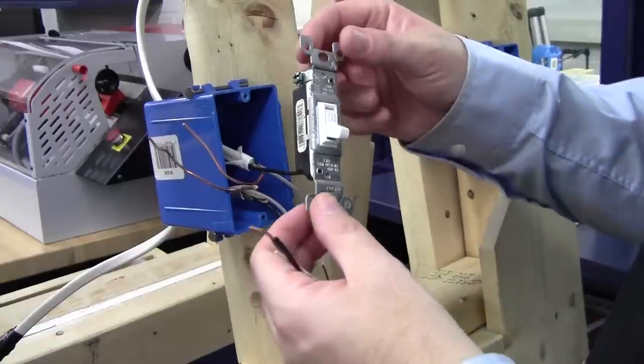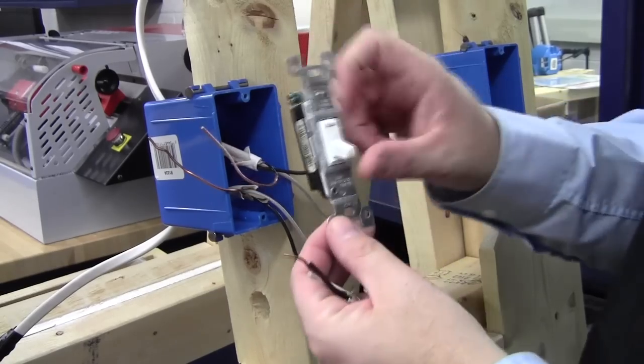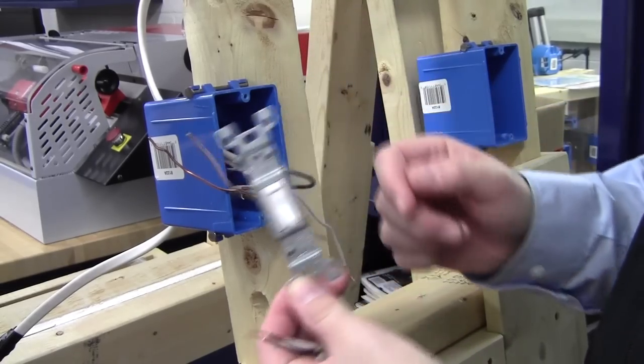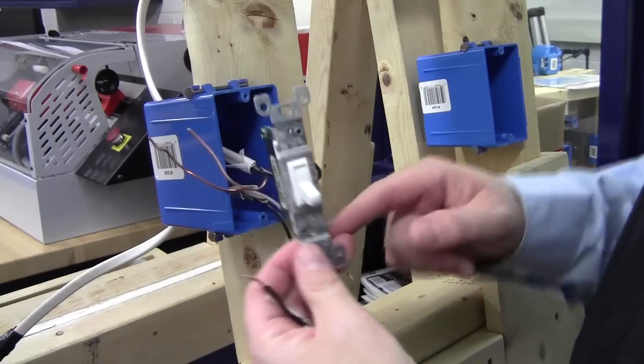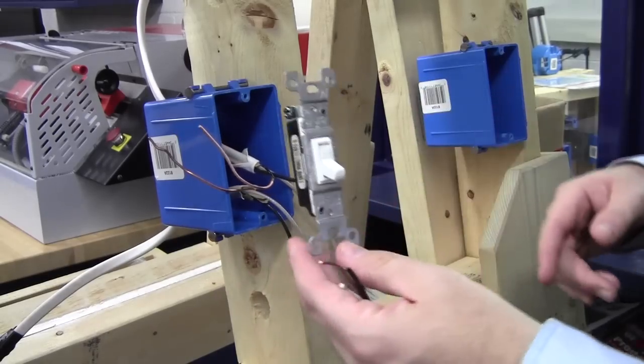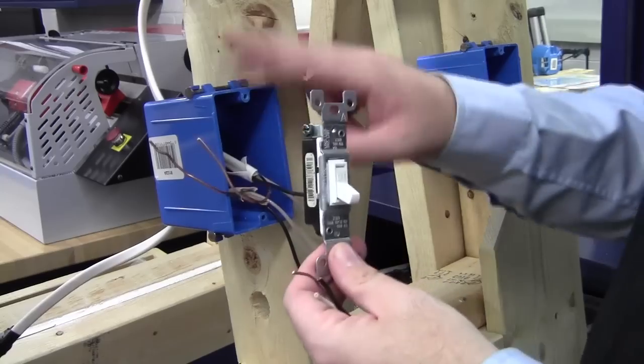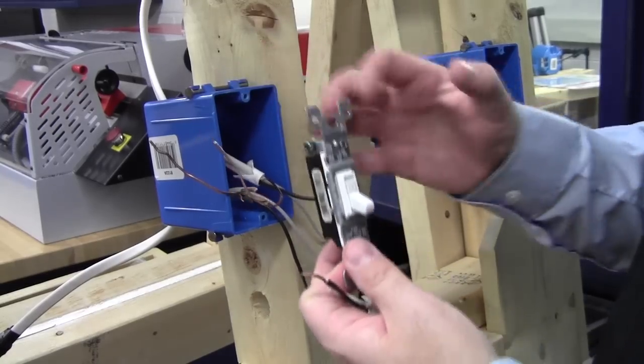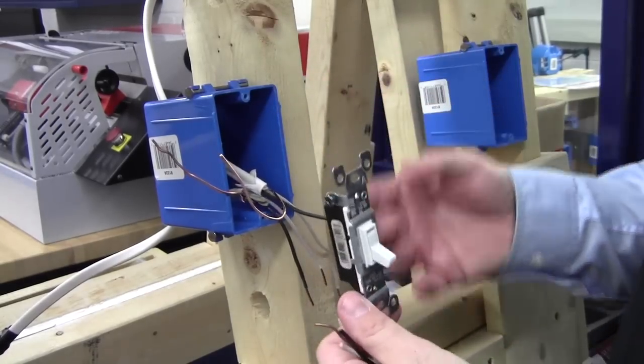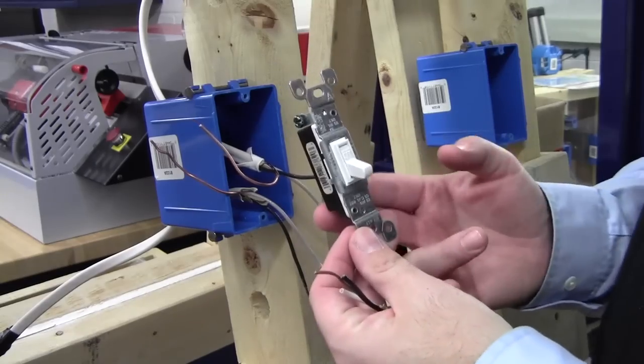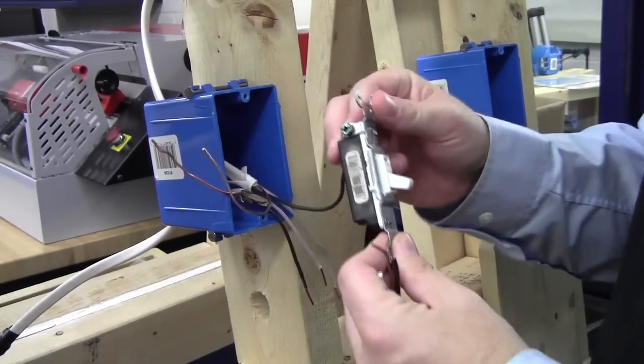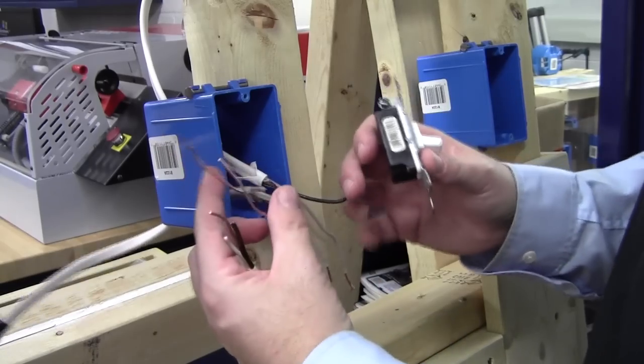Whenever you are hooking up a switch like this, this is just a regular toggle switch, just a regular single pole switch for a single light source. Whenever you are hooking something like this in a plastic box or any box for that matter, you need to make sure it is grounded. The proper procedure for grounding a switch like this is to use what is called a pigtail.